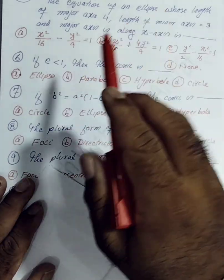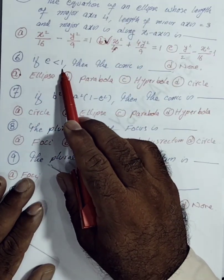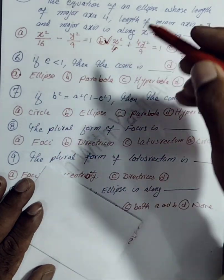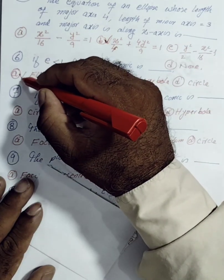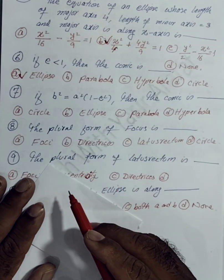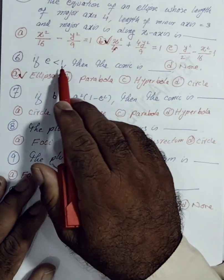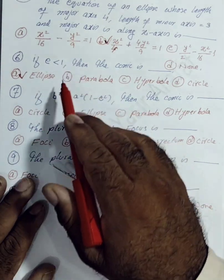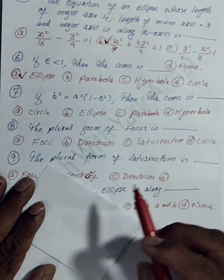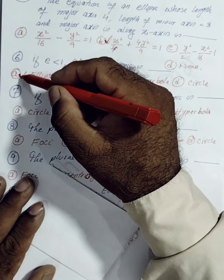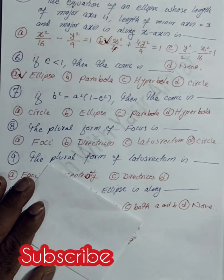For the sixth MCQ: if eccentricity E < 1 the conic is an ellipse, if E = 1 the conic is a parabola, and if E > 1 the conic is a hyperbola. So the correct option is A for the sixth MCQ.